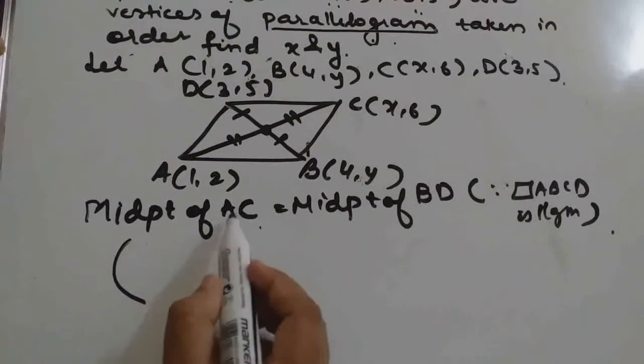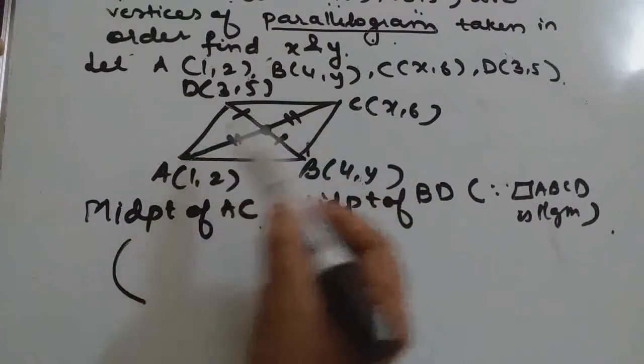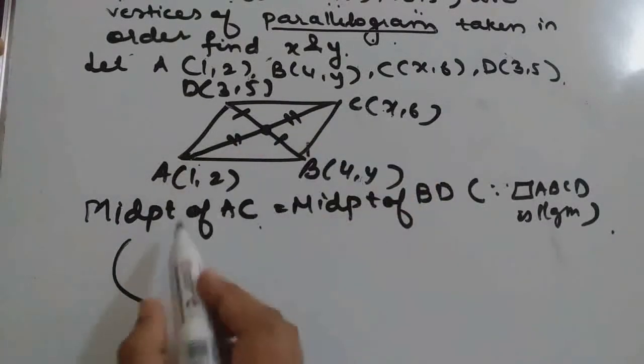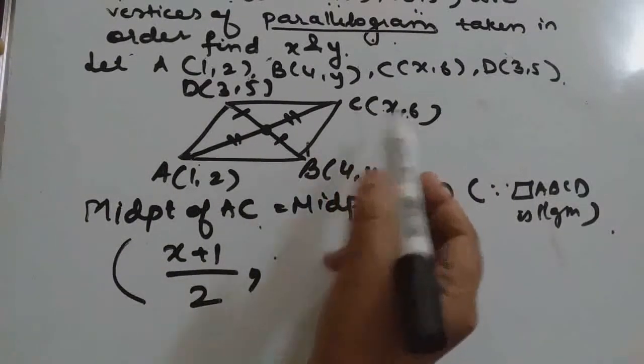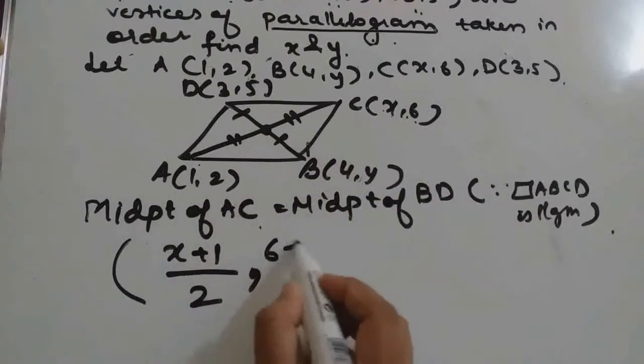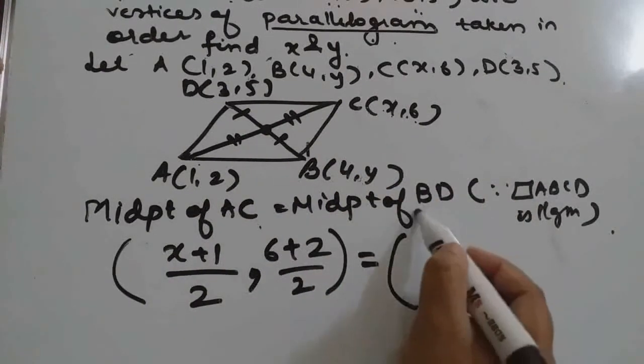What is the formula for midpoint? We should add x coordinates of both the points, that is (x + 1) divided by 2. And to find y coordinate, we will add y coordinates: (6 + 2) divided by 2, is equal to... Now, midpoint of BD.